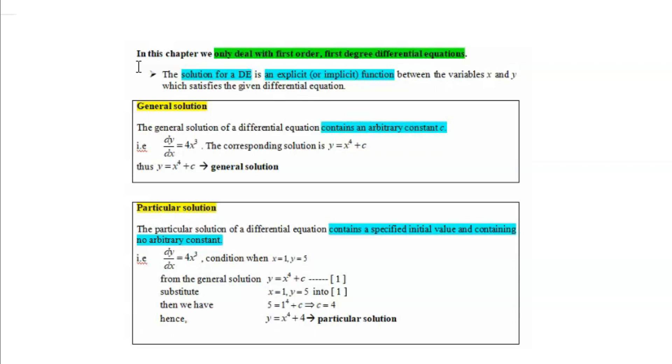this is the general solution, because it contains c, and we need to substitute the provided x and y values into this equation. When the general solution has been substituted with the specified initial values, then we will have calculation for c equals 4.